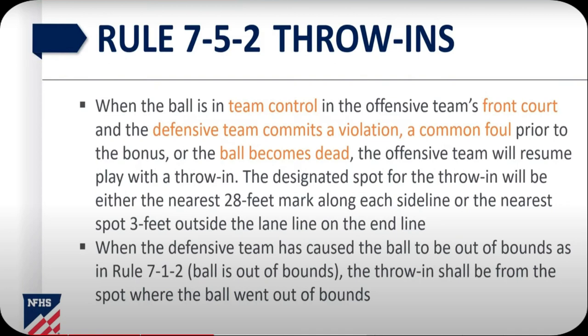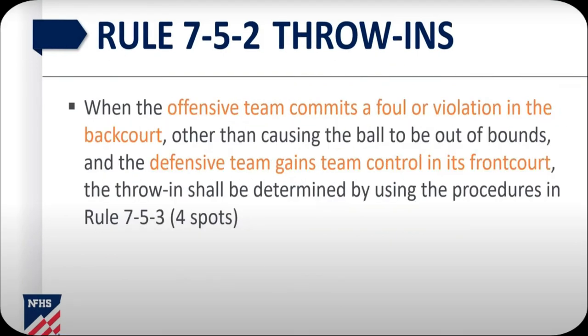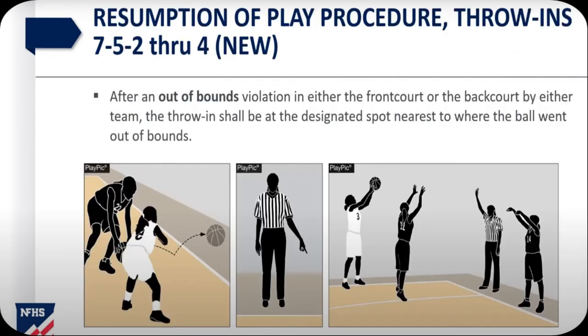When the defensive team has caused the ball to be out of bounds as in rule 7-1-2, the throw-in shall be from the spot where the ball went out of bounds — that part, nothing's changed. When the offensive team commits a foul or a violation in the backcourt other than causing the ball to be out of bounds, and the defensive team gains team control in the front court, the throw-in shall be determined by using the procedures in rule 7-5-3, the four spots as we discussed in the first part of this episode.